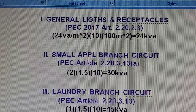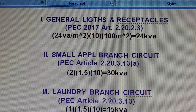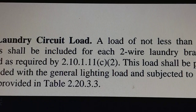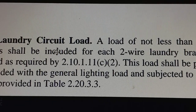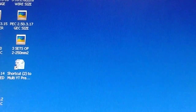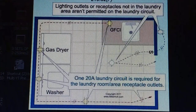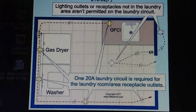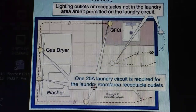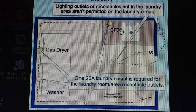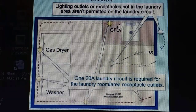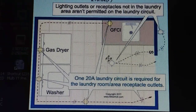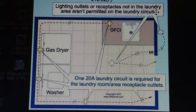For the laundry branch circuit, we only have one here. The article states that not less than 1500 volt-amperes shall be included for each two-wire laundry branch circuit, so we need only one two-wire laundry branch circuit. In the laundry layout, we have a 20-amp laundry circuit with a GFCI receptacle for the washer. According to the code, you must not connect any light circuit to this laundry branch circuit — this is not allowed.